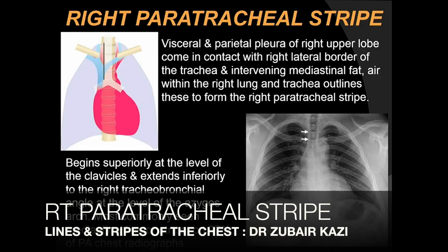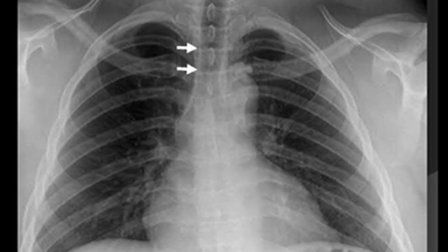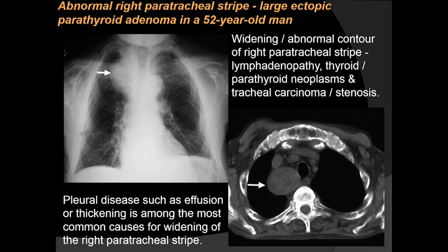The right paratracheal stripe is formed when the visceral and parietal pleura of the right upper lobe come in contact with the right lateral border of the trachea and intervening mediastinal fat. It begins superiorly at the clavicles and extends inferiorly to the right tracheobronchial angle at the level of the azygos arch. It is most commonly seen and most commonly displaced by right paratracheal lesions. Here an abnormal right paratracheal stripe is displaced laterally, and CT reveals a lesion in the right paratracheal region — an ectopic parathyroid adenoma.